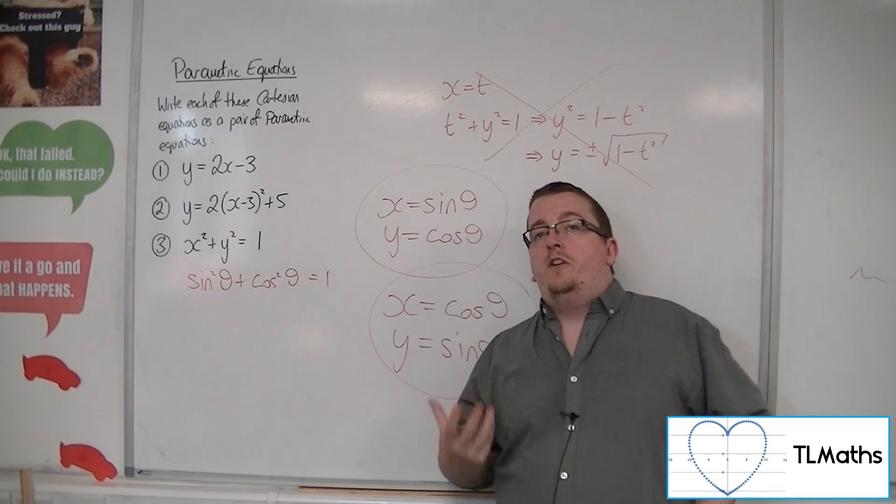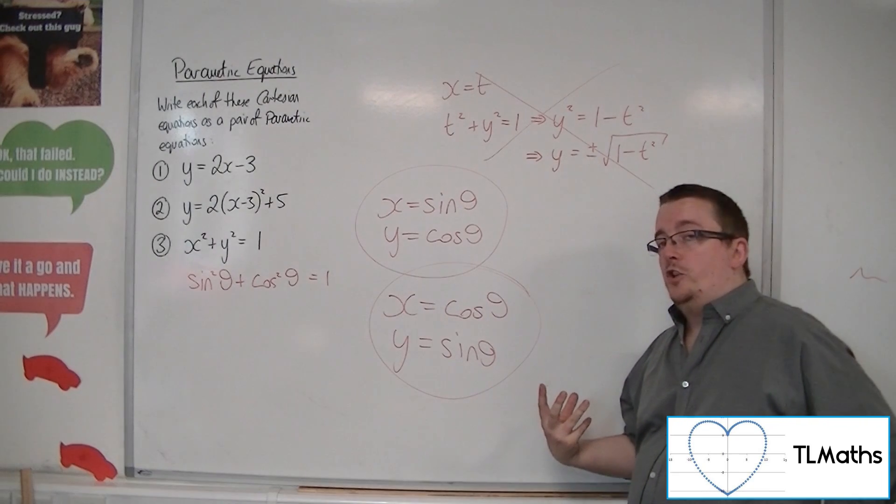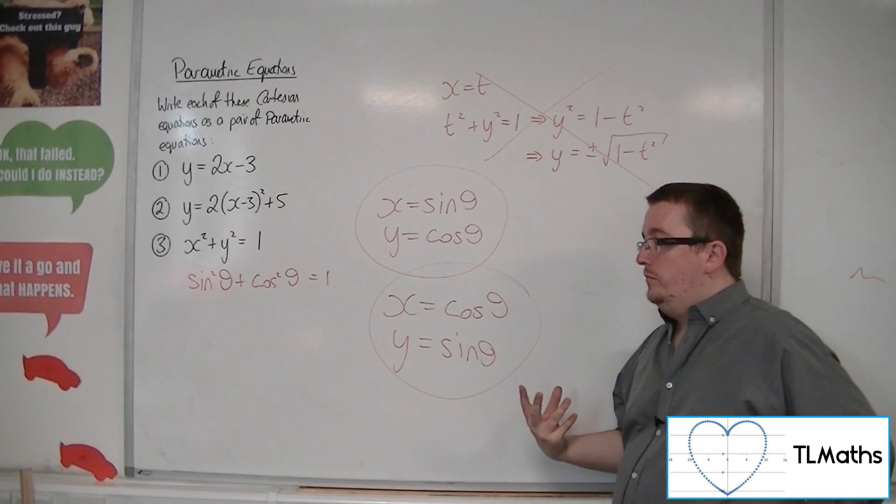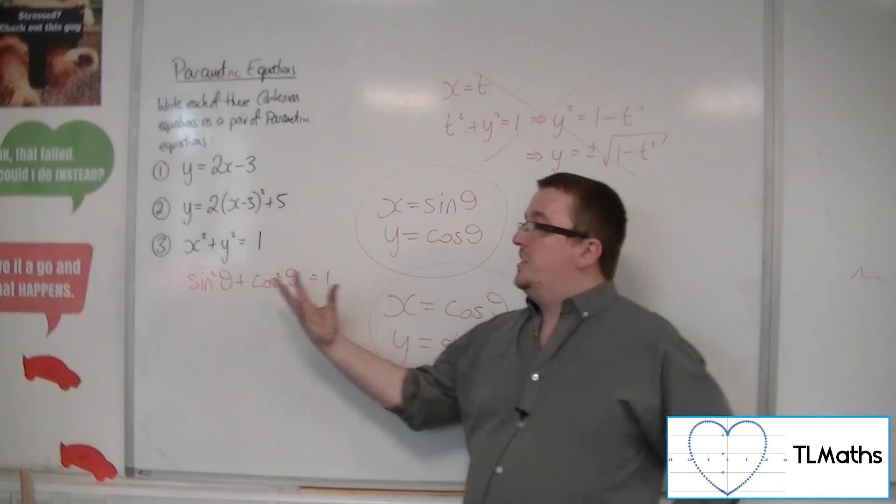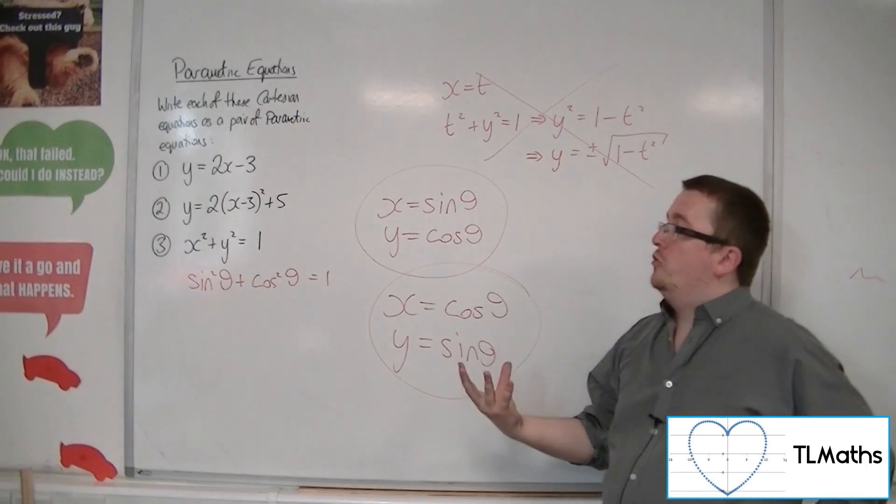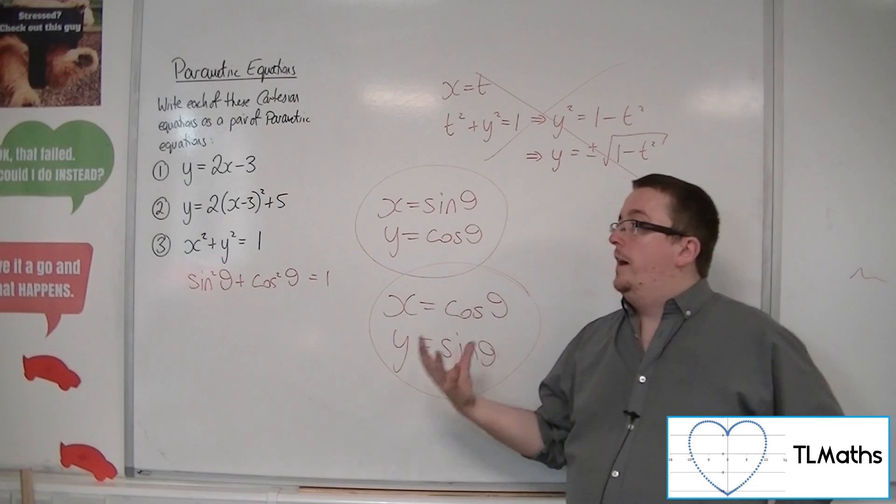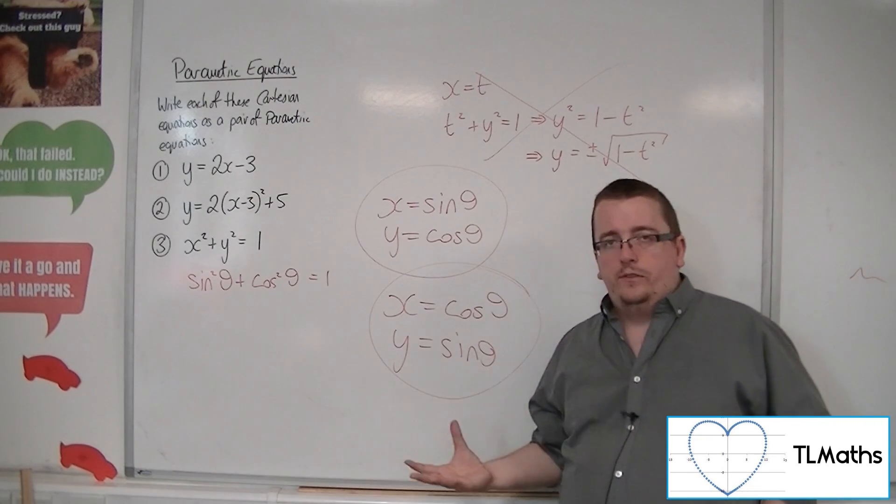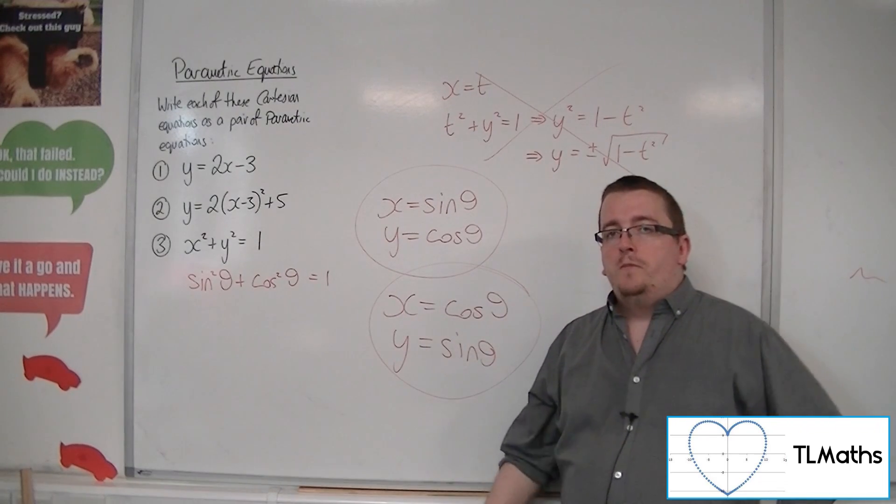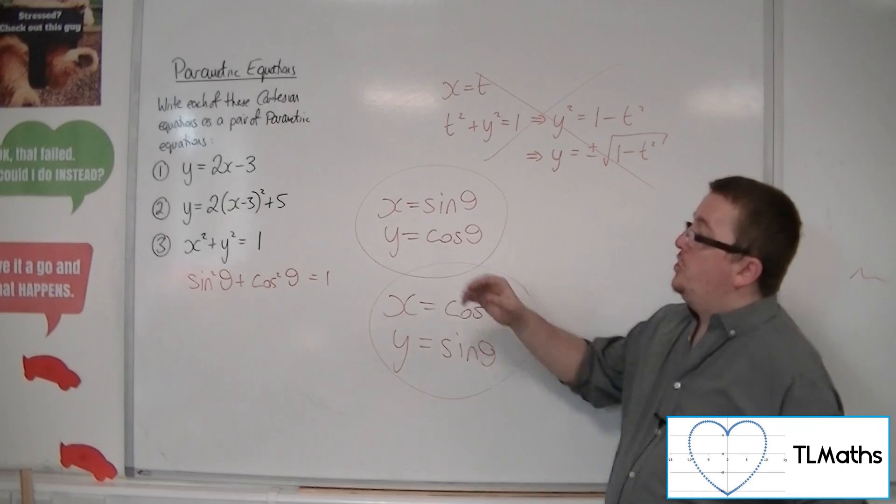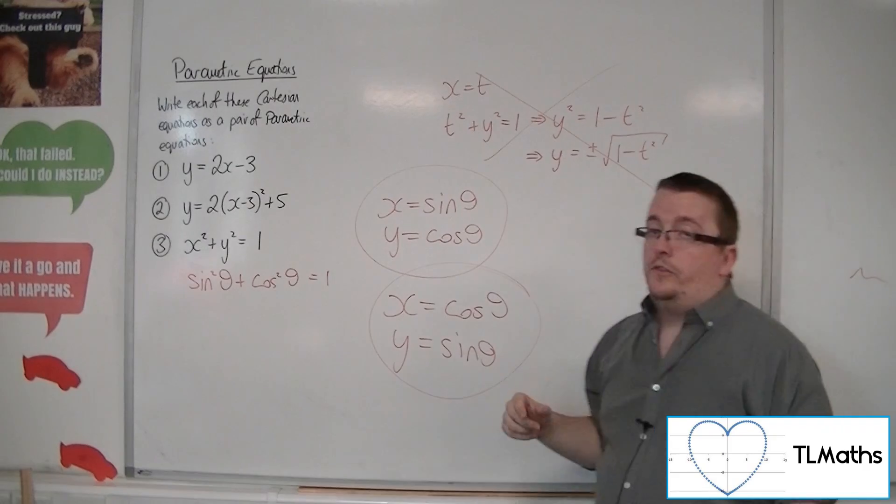...there isn't so many ways of writing one of those down when you've got the parametric equations given to you. So that's usually the process that we go through. But it's good to see the other side going from Cartesian to parametric because it's not as straightforward as you might always think it is. Sometimes there can be little things to consider along the way, especially with what we met in number two and certainly with number three with this square rooting.